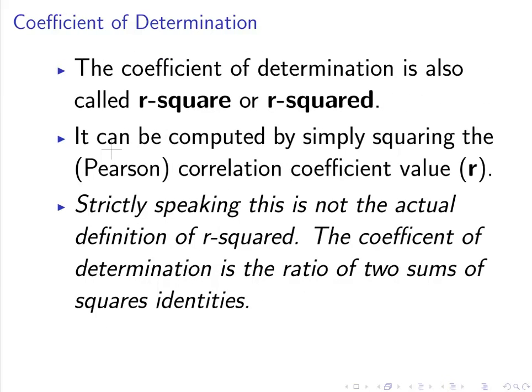It's also called r-squared or r-squared, and it can be computed by simply squaring the Pearson correlation coefficient value r. Now an important point,